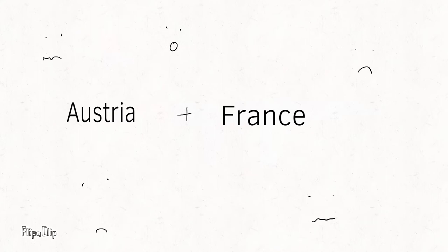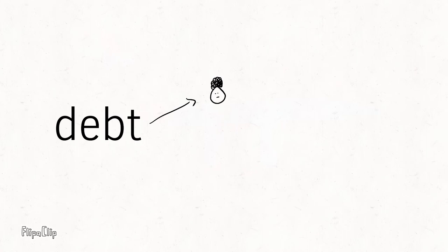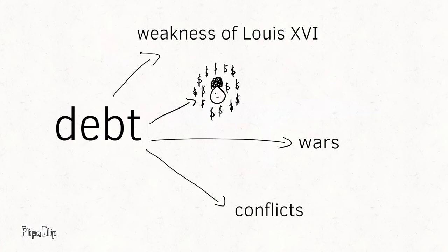However, it would be unfair to blame France's debt crisis solely on Marie Antoinette's spending addiction. Their engagement in foreign wars and conflicts, as well as the weakness of character of her husband, both contributed to the dreary state of French finances in the 1770s and 1780s.